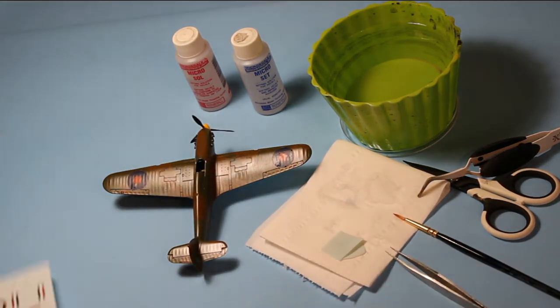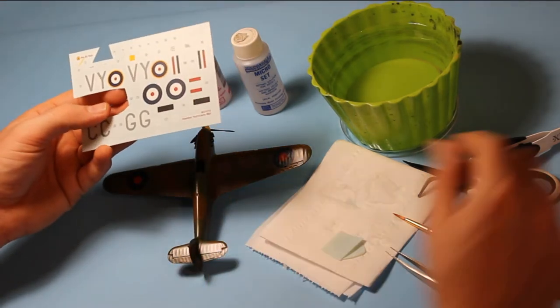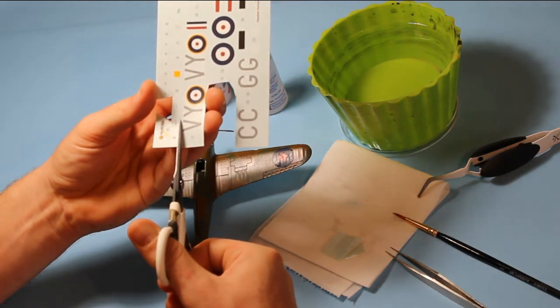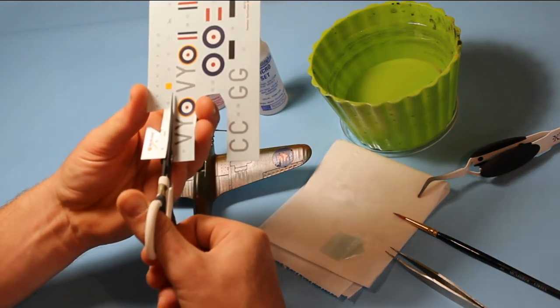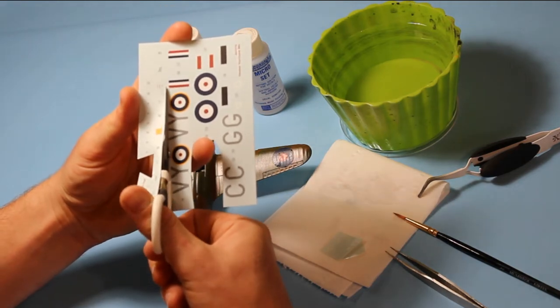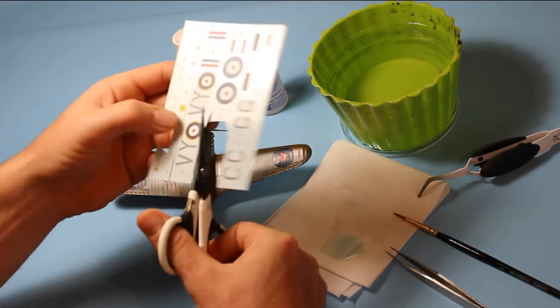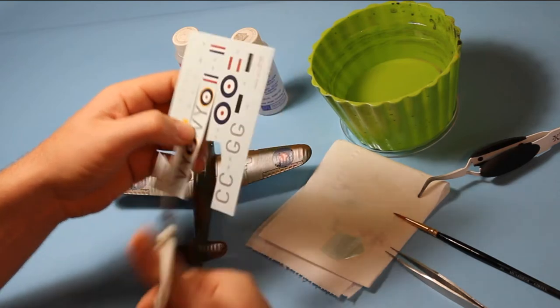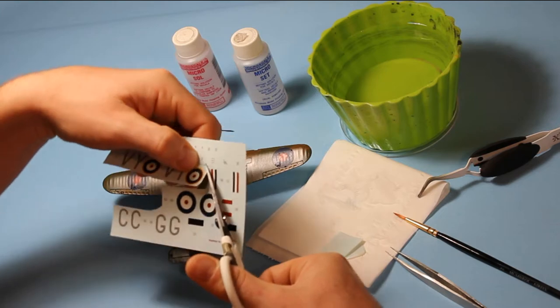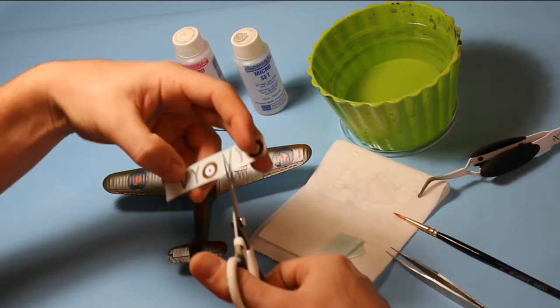Before I do that, I will get the next decals to go on. I think I'll do the lettering down the side. I will leave the carrier film for argument's sake here, instead of cutting around. I don't tend to find it too much of a problem. But as I say, it might be an idea if you're worried to cut into the letters quite tight.